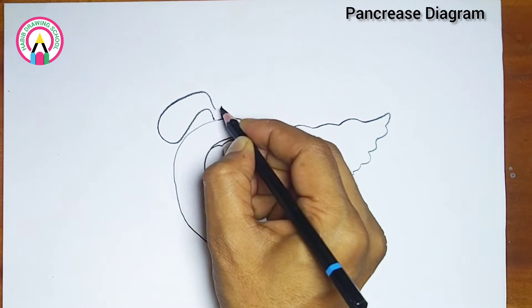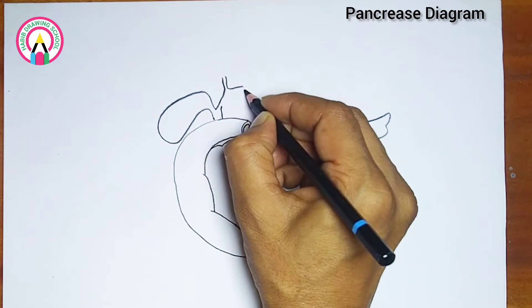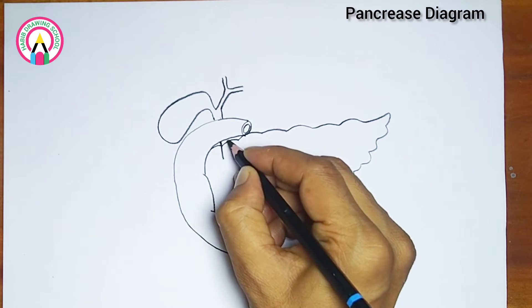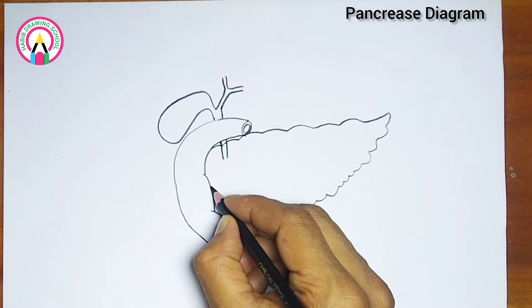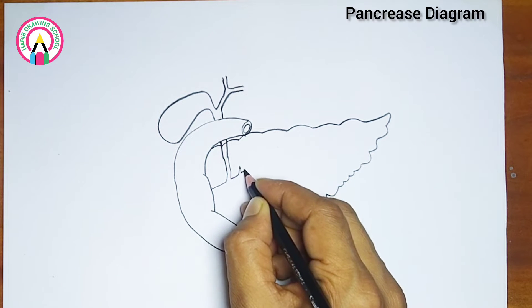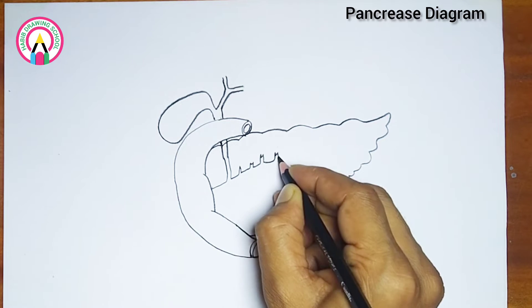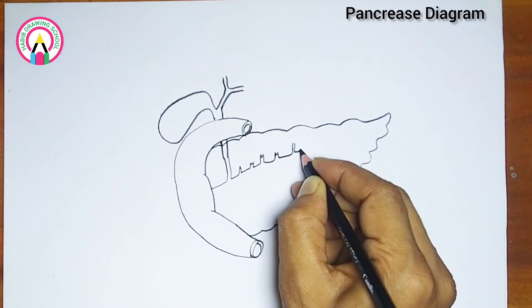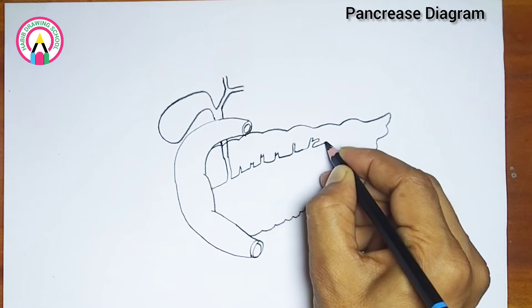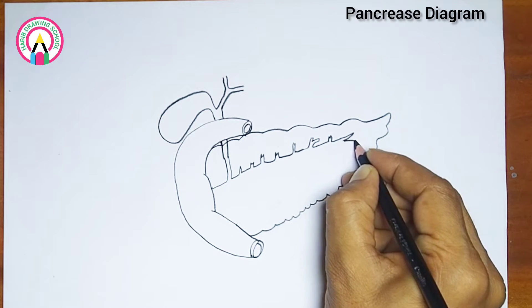The pancreas is divided into three main parts: one, head - the widest part of the pancreas, located on the right side of the abdomen; two, body - the central portion; three, tail - the narrow end which extends towards the left side of the abdomen. These parts work together to produce digestive enzymes and hormones essential for maintaining proper bodily functions.